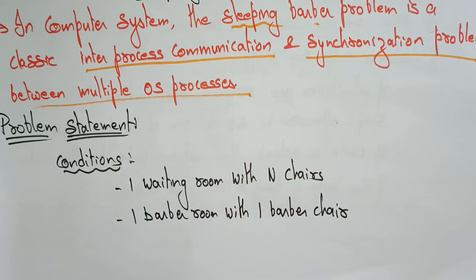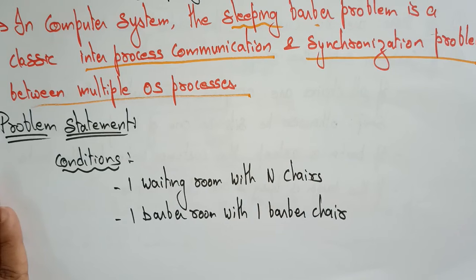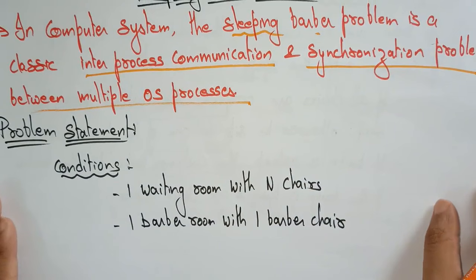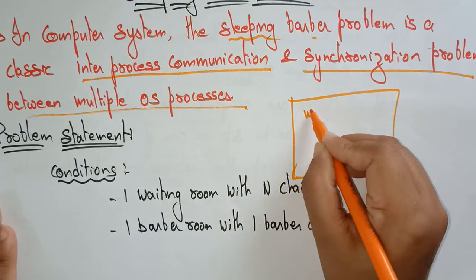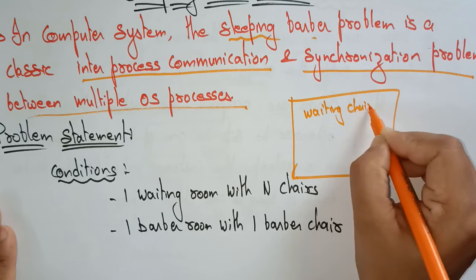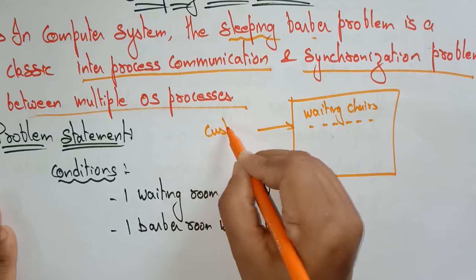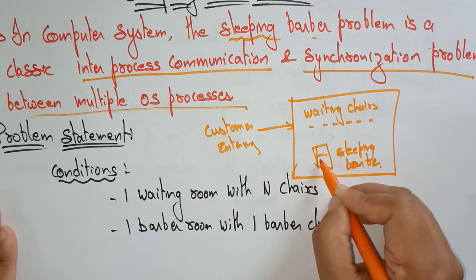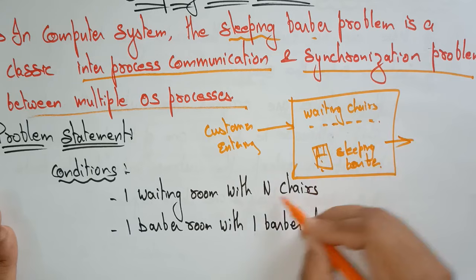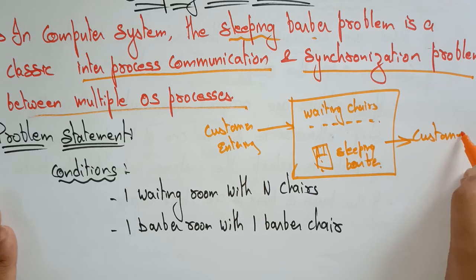Let me give a brief description of the Sleeping Barber Problem. In a saloon, there are waiting chairs where customers enter and sit. The barber is present, but if no one is there, he is sleeping. There is a barber's chair and a waiting hall with chairs. When the haircut is over, the customer leaves from one side.